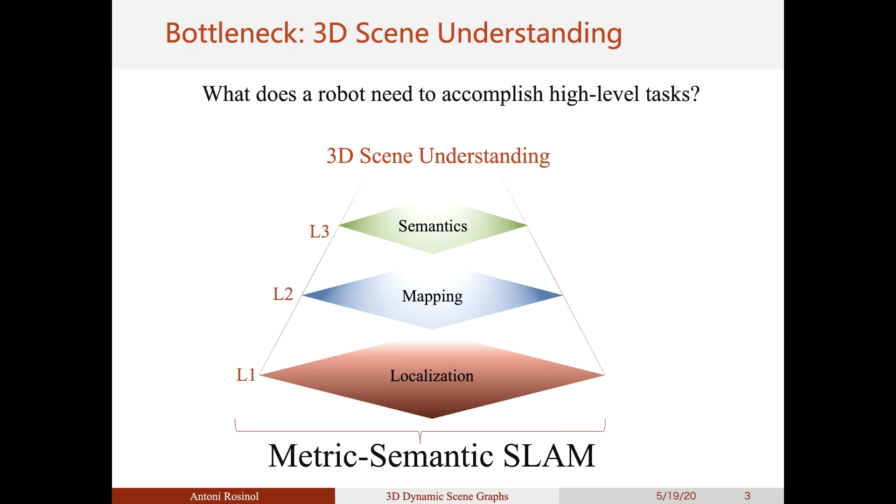It also needs to know what is the geometry of the scene it is operating on. The second element is therefore mapping. Finally, it does not suffice to know the geometry. One must also know what is the semantic meaning of this geometry in order to infer where to go next. To achieve this level of 3D scene understanding, we therefore have to provide a robot with a metric semantic localization and mapping algorithm, also known as metric semantic SLAM.